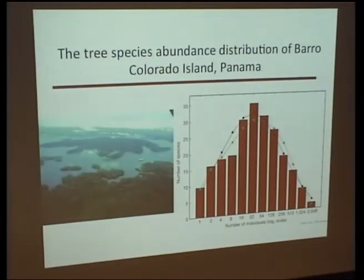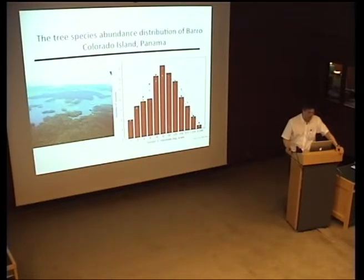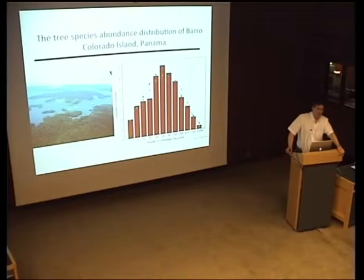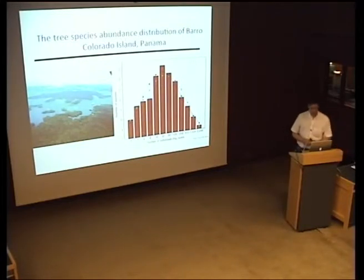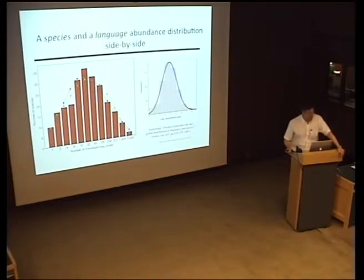Steve Hubbell tried to explain this distribution using what he called the neutral theory. The neutral theory has been very controversial in biology because the main assumption is that all individuals in the same trophic level, independently of the species, are equal. For biologists, this is a tremendous assumption. But I thought that when it comes to human beings, it's much more reasonable to assume that independently of the language we speak, we are all the same. So why not try to use neutral theory to explain the pattern we observe in languages?